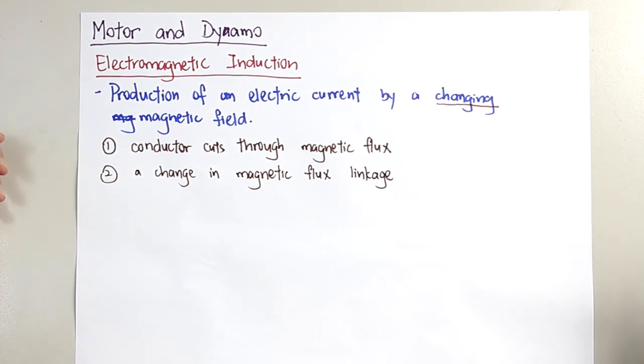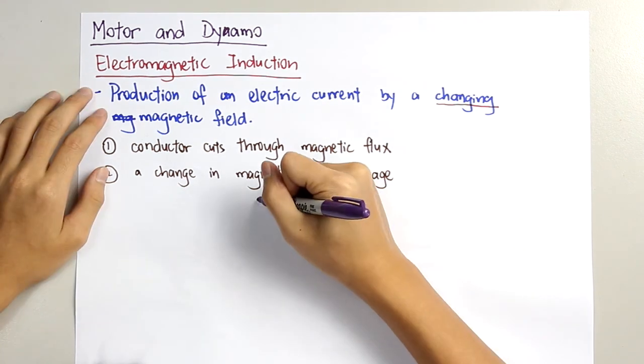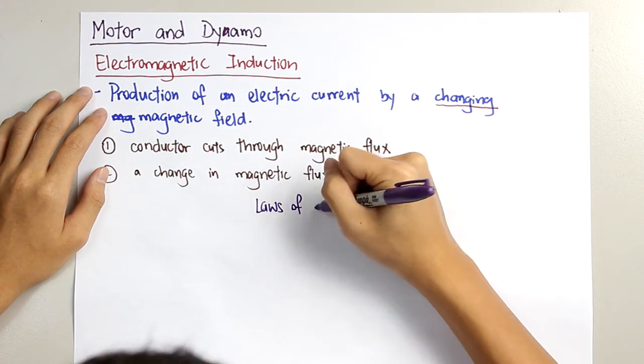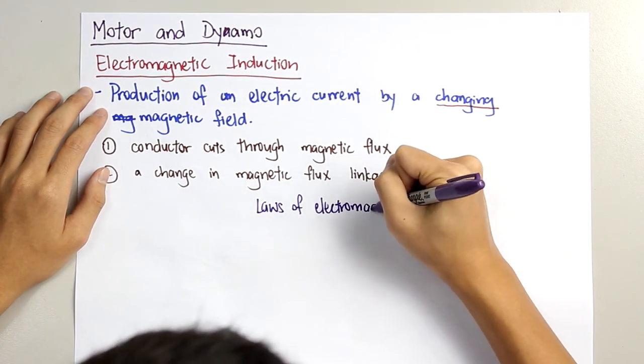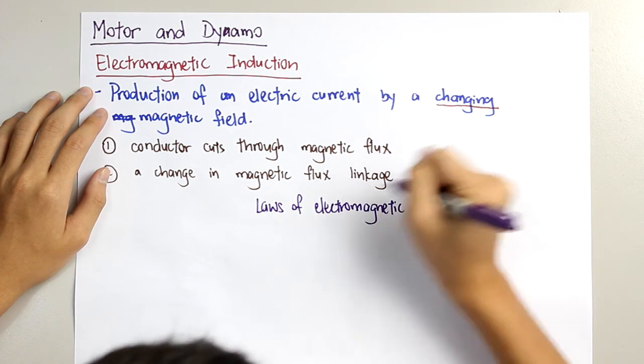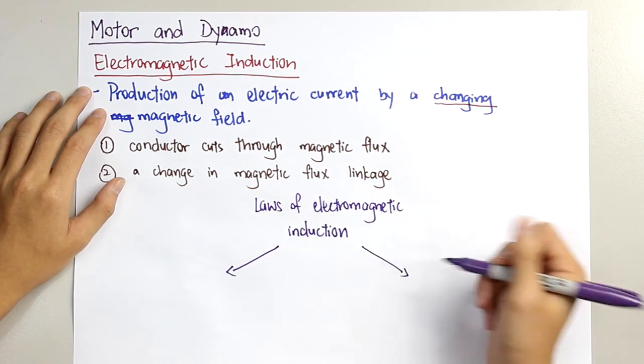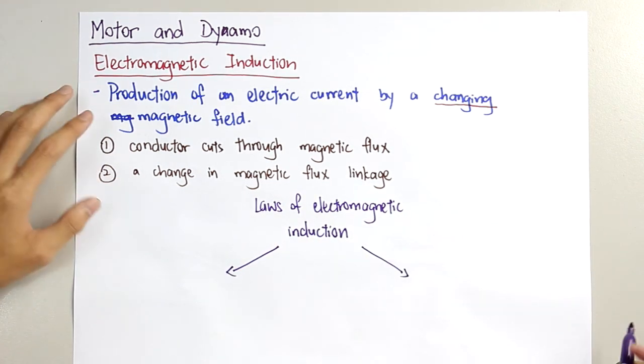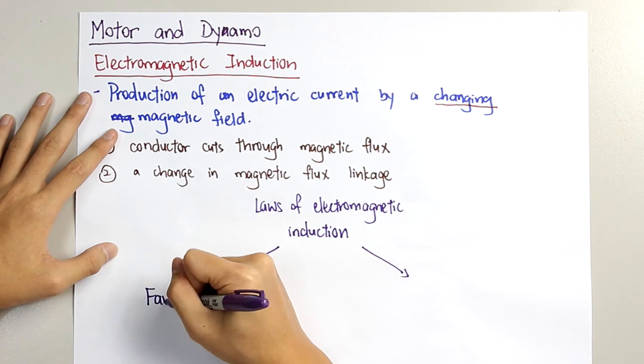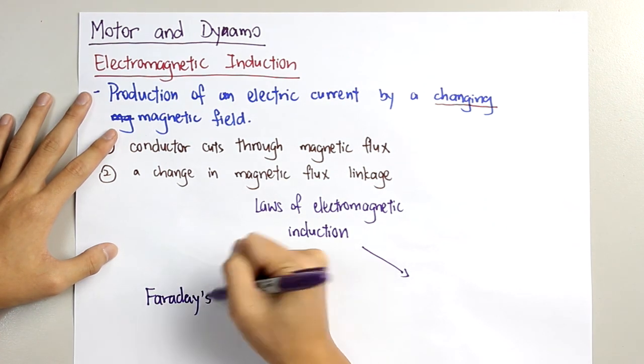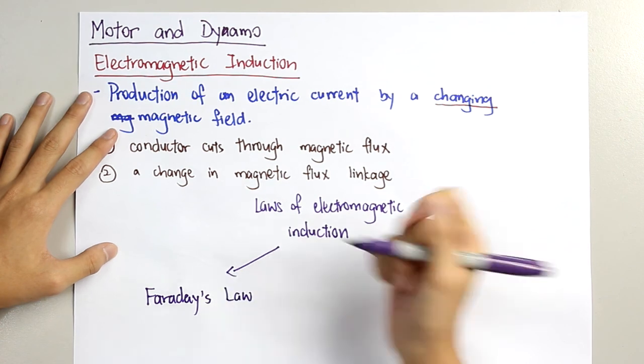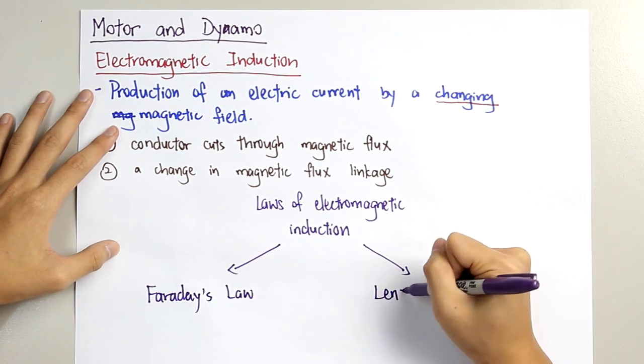there must be a change in magnetic flux linkage. So there are two principal laws of electromagnetic induction. The first law is called Faraday's law. And the second law is Lenz's law.